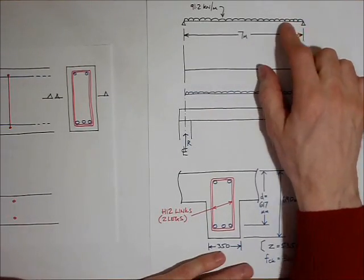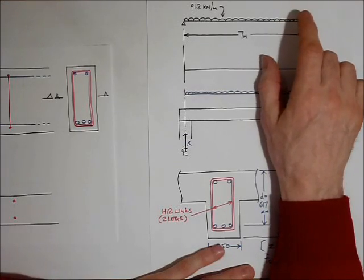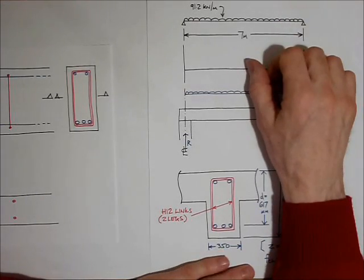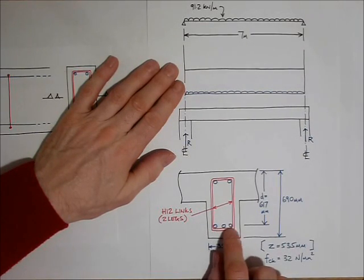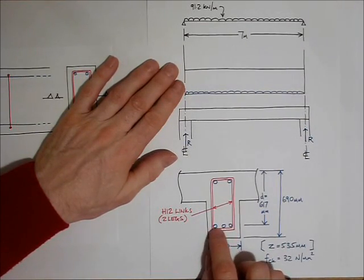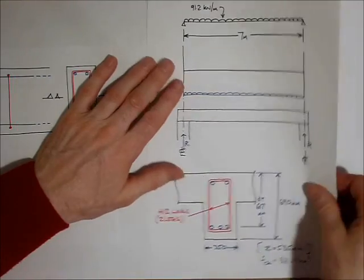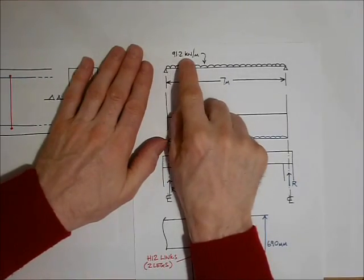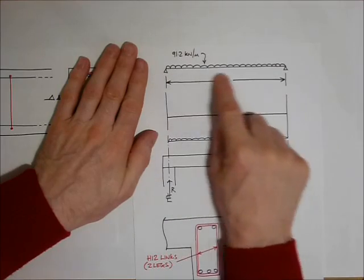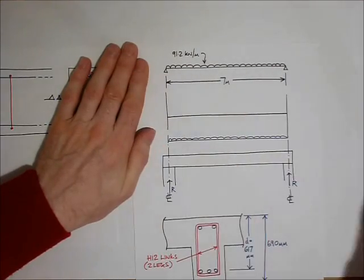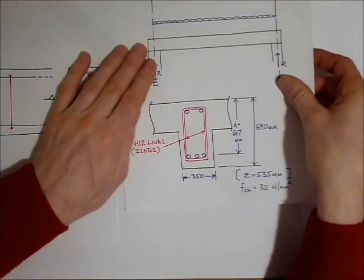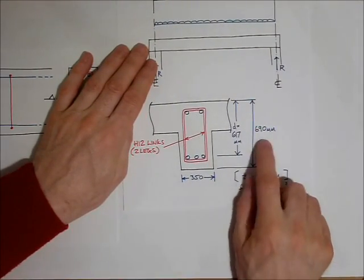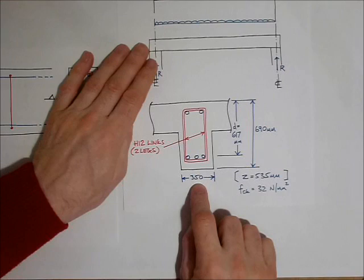In a different video we've looked at the same beam and designed the main bending reinforcement and we found that it needed 3H32 to carry a UDL of 91.2 kN/m over a span of 7m. The support widths are 400mm and the beam itself has an overall depth of 690mm, a width of 350mm.